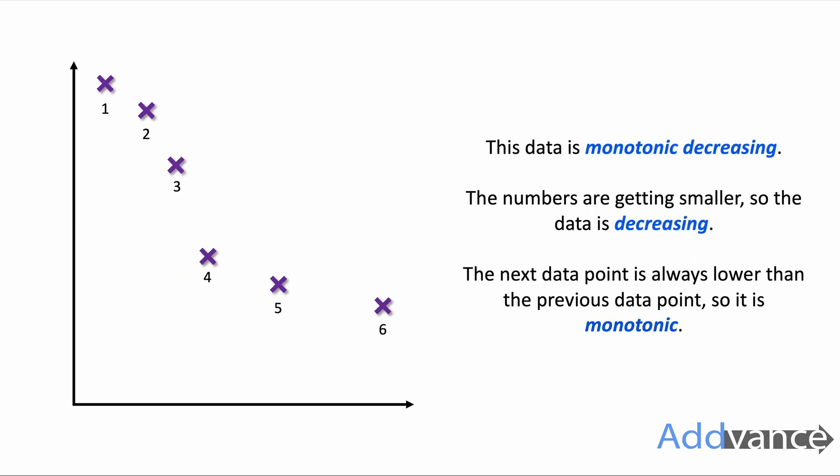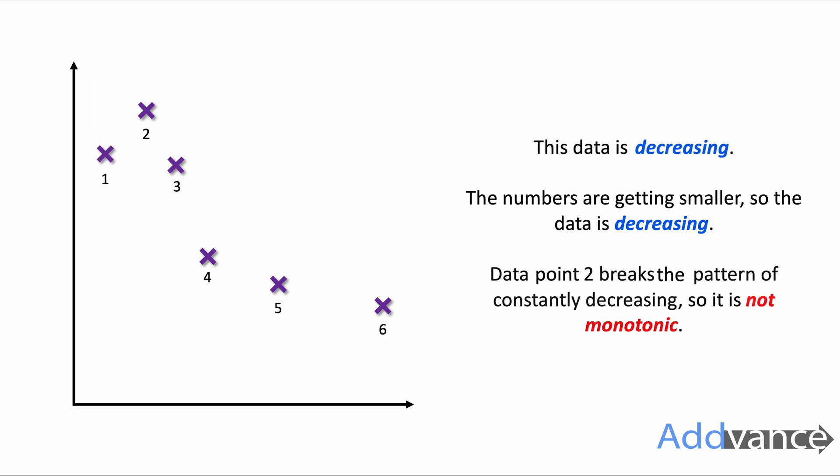Here we have a graph that's decreasing, and we call this monotonic decreasing. That's because all of the data is in perfect order. However, here this breaks the pattern — data point two seems to be out of order between one and three. It is not monotonic but it is still generally decreasing.